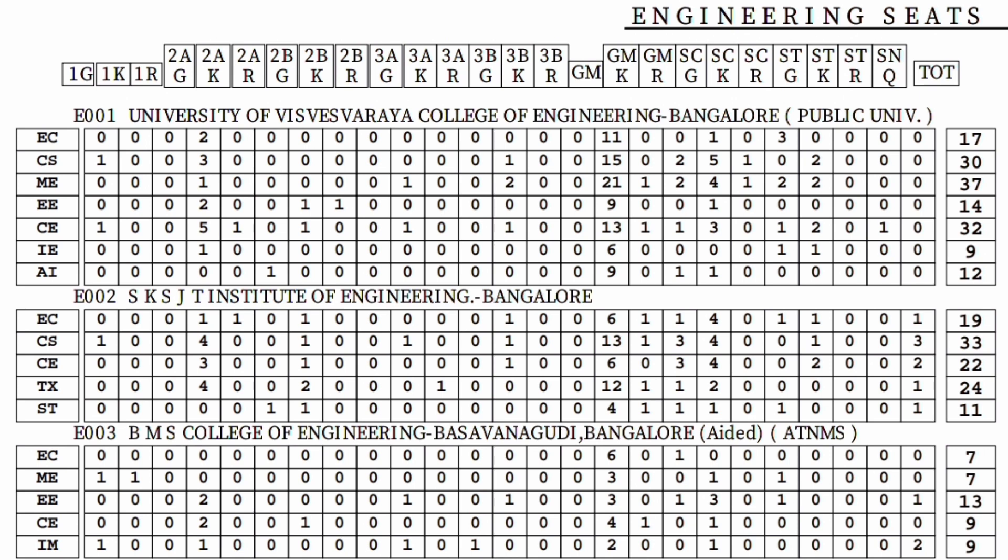Those are the category names and the total. On the left side you will see the branch name. EC means electronics and communication engineering, CSC means CS, ME means mechanical engineering, EE is for electrical engineering, CE is civil engineering, IEM is industrial engineering management, and AI is the artificial intelligence branch.